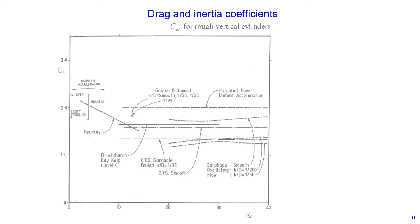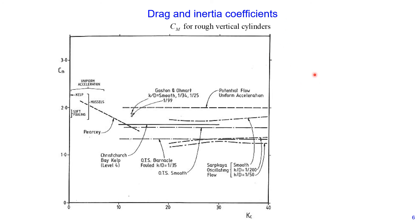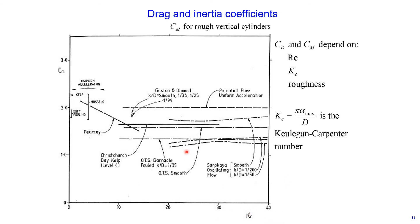This is an example of a diagram that can be used to determine the inertia coefficient. From this diagram, you can see that the inertia coefficient depends on the Keulegan-Carpenter number, Reynolds number, and also roughness. Depending on your design and site conditions, you would choose the inertia coefficient applicable for your design.